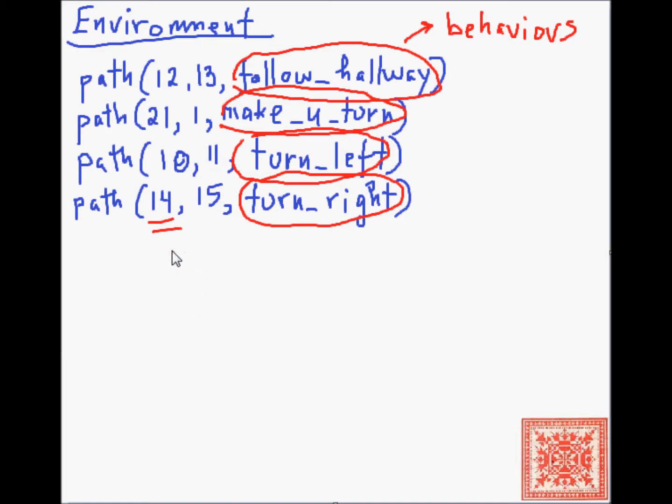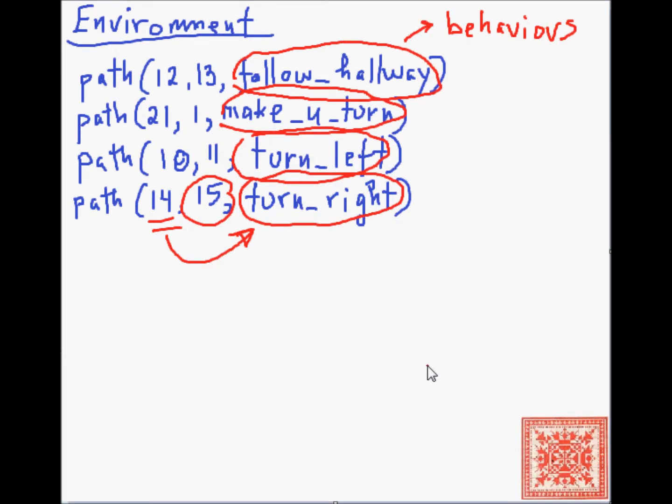And these are RFID tags that, when detected, invoke, enable, or disable these behaviors, such as follow hallway, make U-turn, turn left, and so forth. And these behaviors are specific to a service robot.